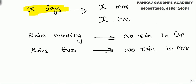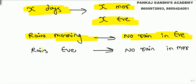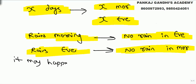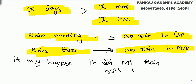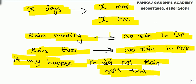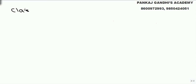A family went on vacation for x days, meaning they had x mornings and x evenings. If it rains in the morning, it cannot rain in the evening, and if it rains in the evening, it did not rain in the morning. However, the reverse is not compulsory — it may happen that it did not rain in both the morning and the evening. There is no guarantee that it has to rain.